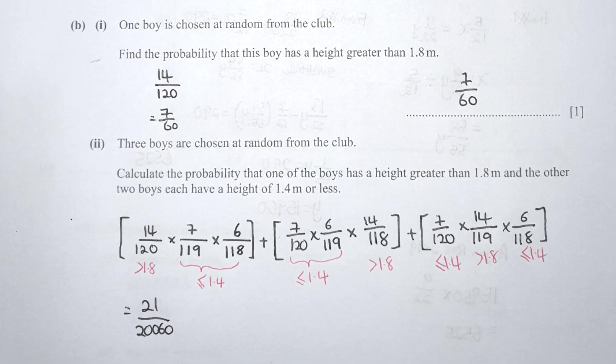For part B, one boy is chosen at random. Find the probability that this boy has a height greater than 1.8 meters. This refers to the interval 1.8 < H ≤ 1.9, which has 14 students. So 14 divided by 120, simplified, gives 7 over 60 as the final answer.